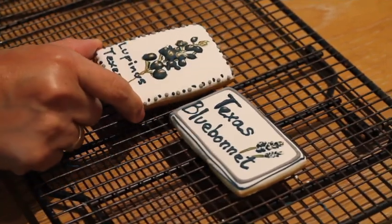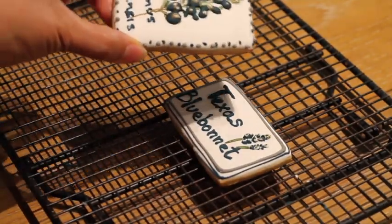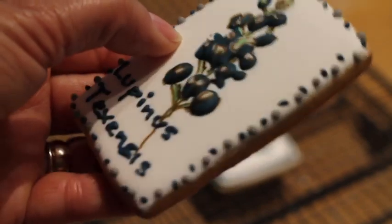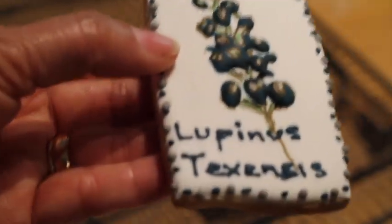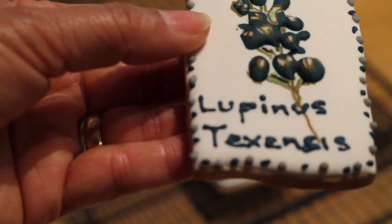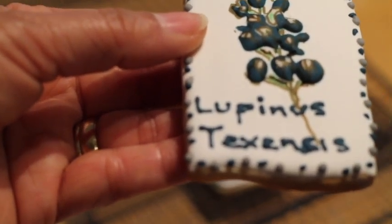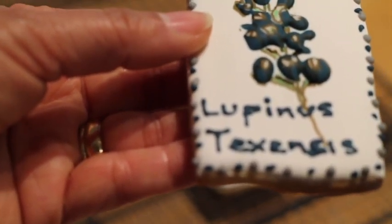This is how the cookie looks at the end. I decorated a little bit the border of the cookie and I used a writing consistency icing to write the scientific name of the Texas bluebonnet. That is Lupinus texensis.